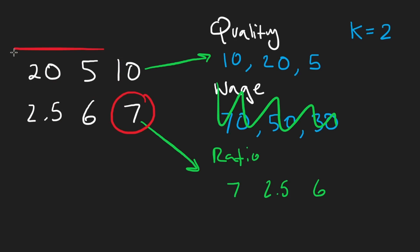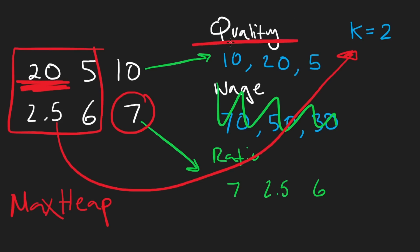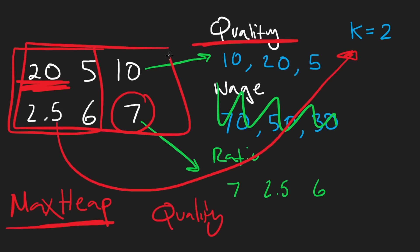So when we store these people as part of our group of size K, the data structure we're going to use is a heap — specifically a max heap — because we want to remove the largest quality from our heap. That's what we're going to store in the max heap: the quality values, even though the input is going to be sorted based on the ratio.